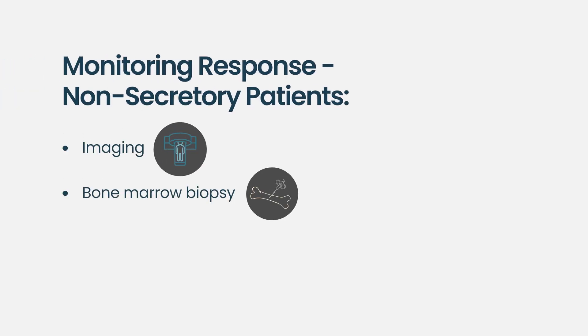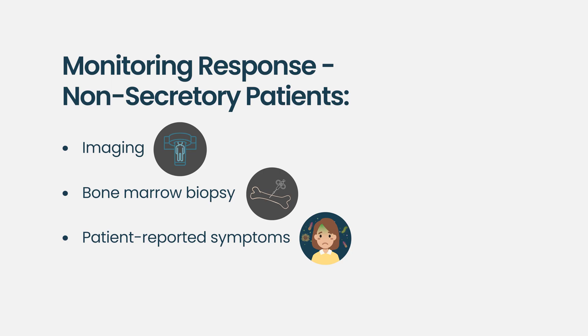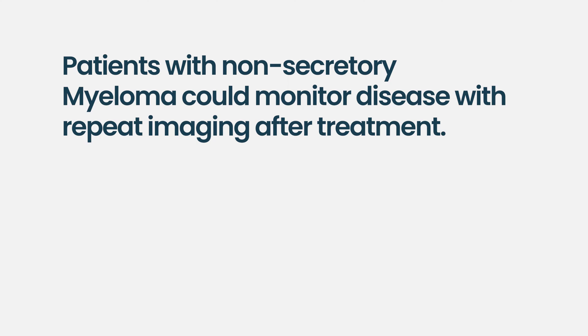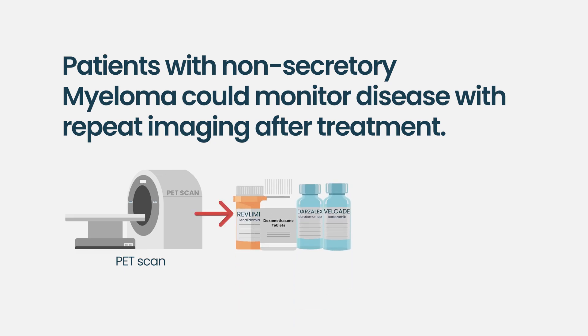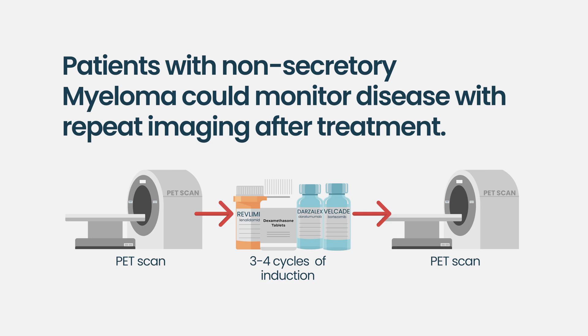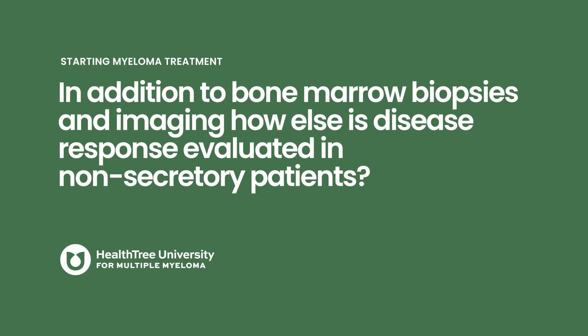For non-secretory patients, it is a combination of imaging, bone marrow, and patient symptoms. For a patient with non-secretory disease, this is usually detected by imaging — I prefer a PET scan at diagnosis, and then after about three to four cycles of induction I'll repeat another PET scan to assess the degree to which lytic lesions have responded in terms of their activity. That's how I assess a non-secretory patient, in addition to bone marrow biopsies.